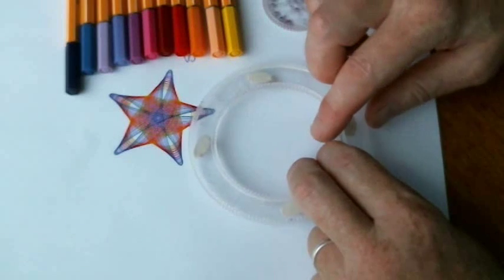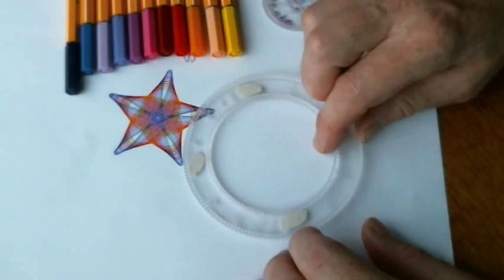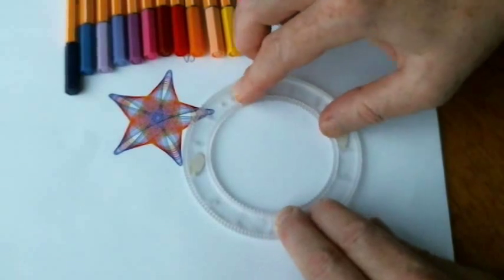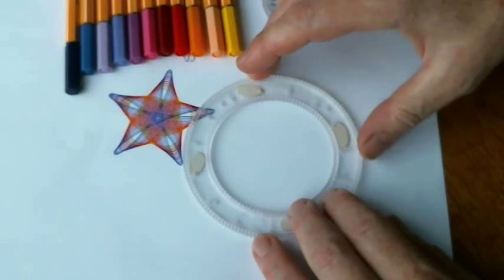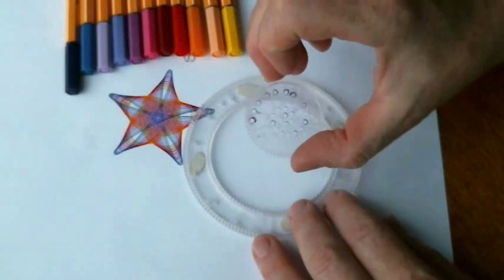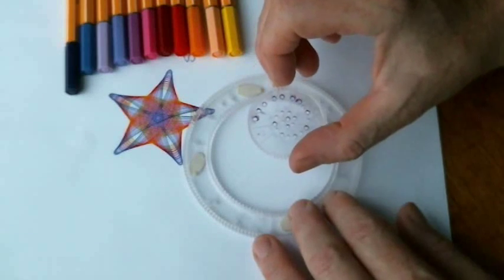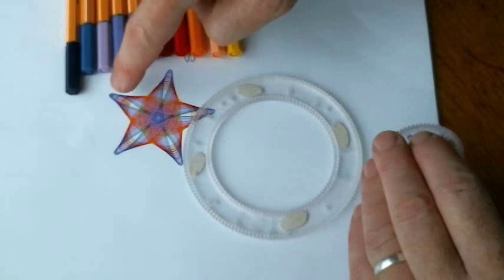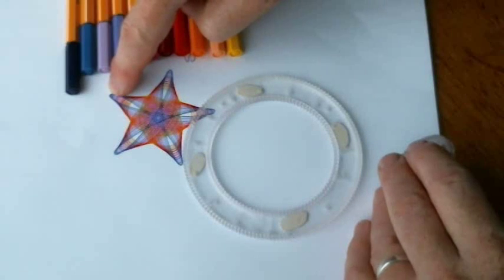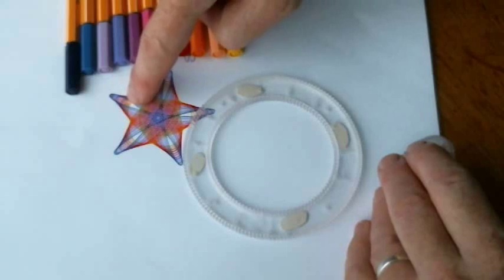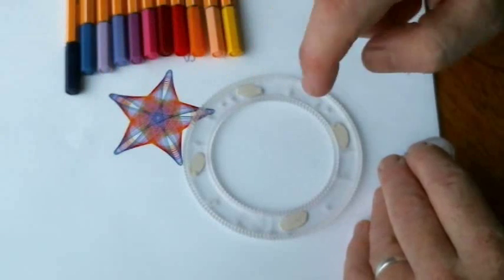In a previous video, I showed you how to make a 5-pointed star using Spirograph's ring 150105 and wheel number 63. In that case, we lined up all the designs from the odd numbers 1, 3, 5, 7, 9, up to 21. We lined them up with the same mark.